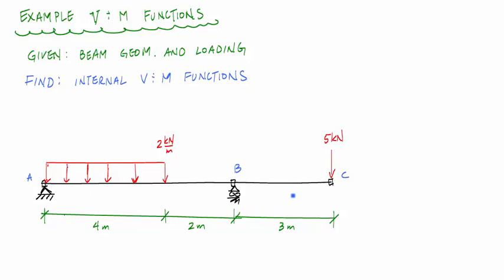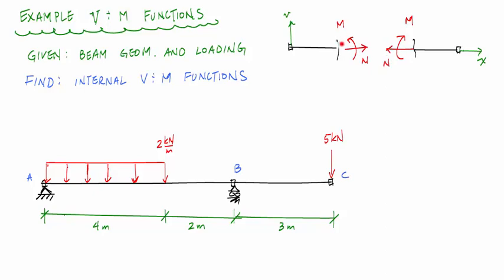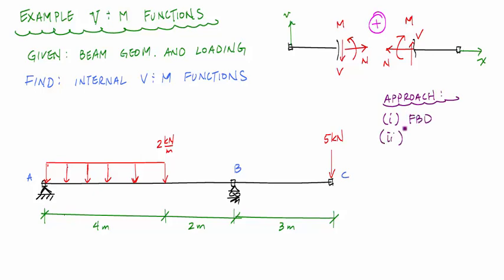Before finding the shear and moment functions, here is my internal positive sign convention. Moments cause compression at the top, normal forces cause tension away from the cut, and shears are equal and opposite on the faces of the cut. On the right side of the cut I go upwards, on the left side I go down. My approach is: one, do the FBD; two, calculate the reactions; three, identify discontinuities.